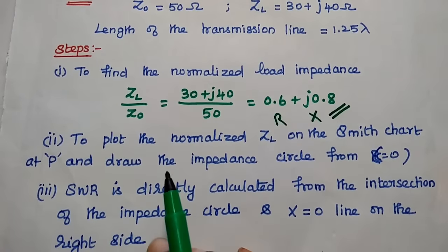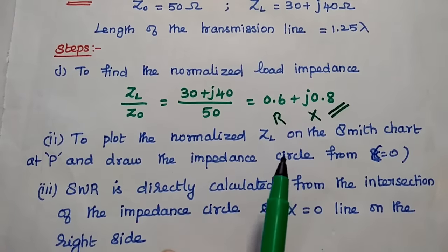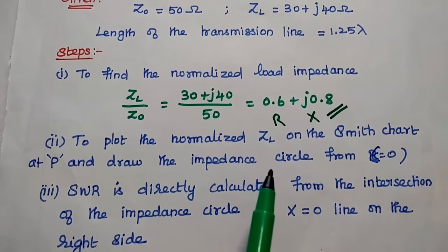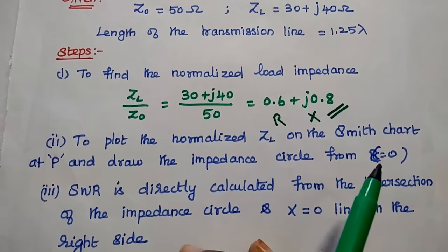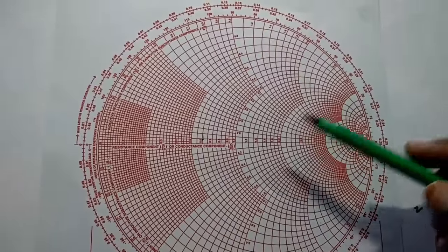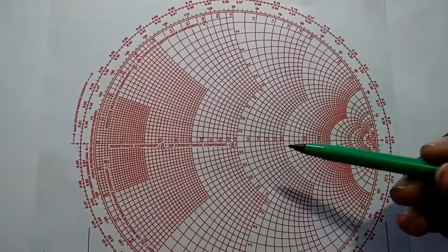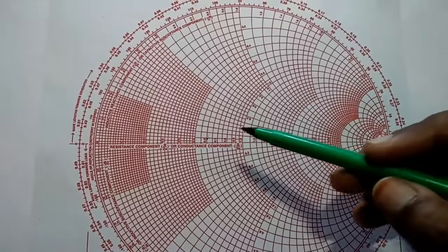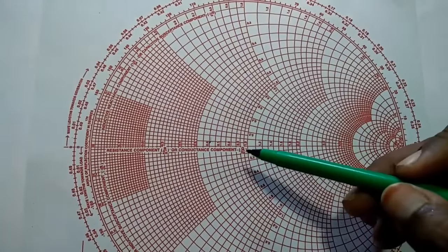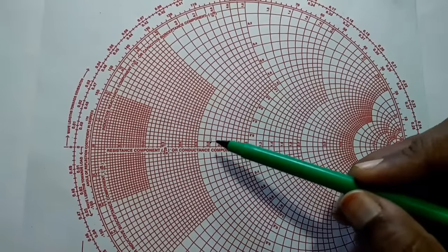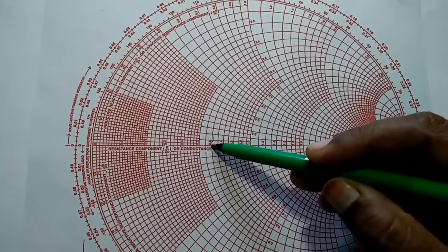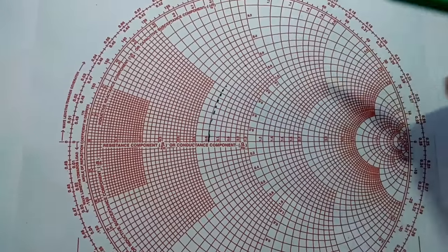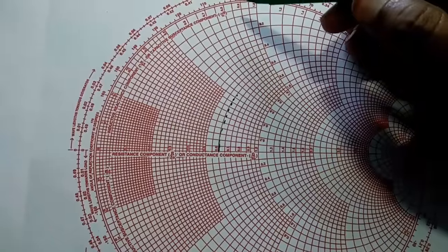In the next step, we are going to plot the normalized load impedance on the Smith chart at point P, and then draw the impedance circle from the origin O. In the Smith chart, for plotting that normalized impedance, we have to take the resistance value as 0.6. So this is the 0.6 resistance circle.